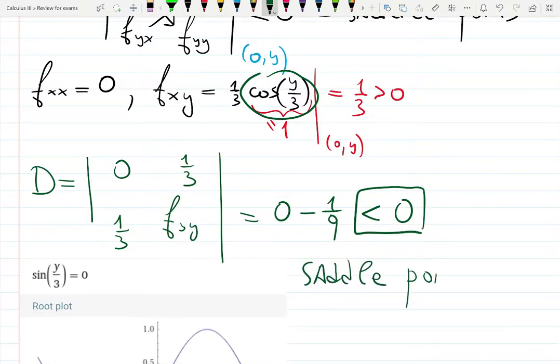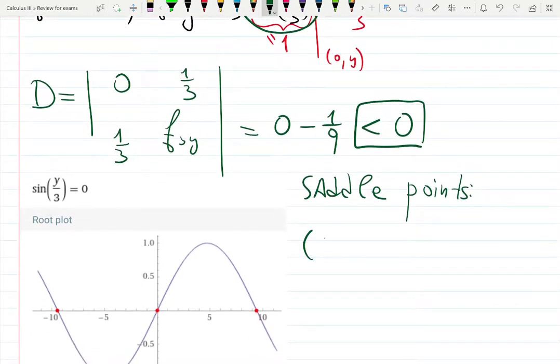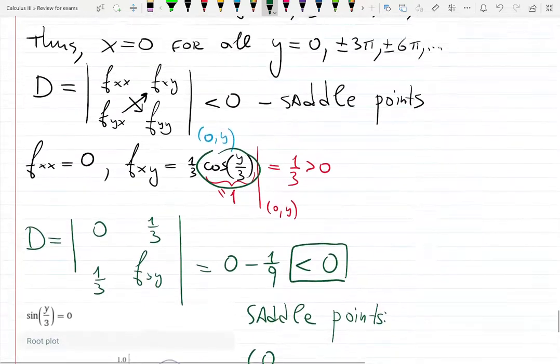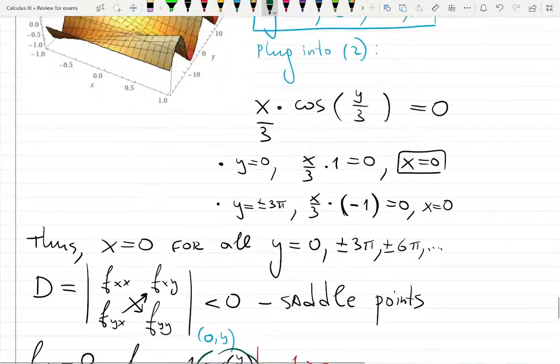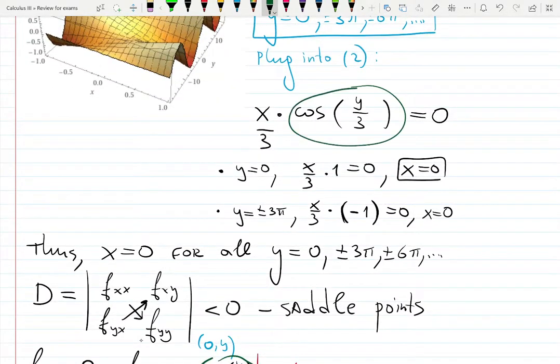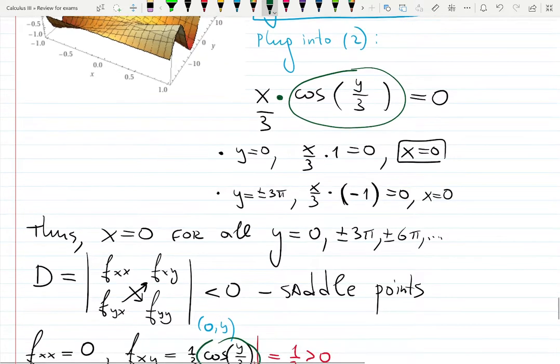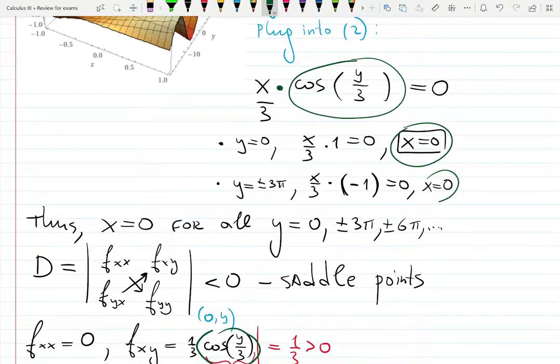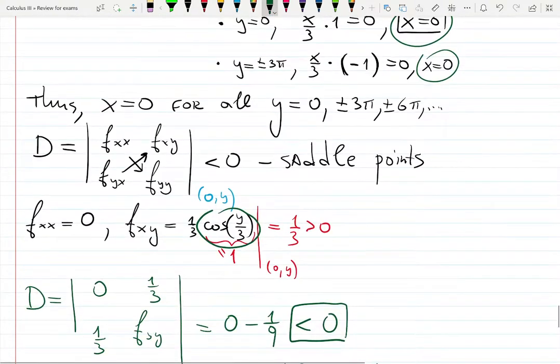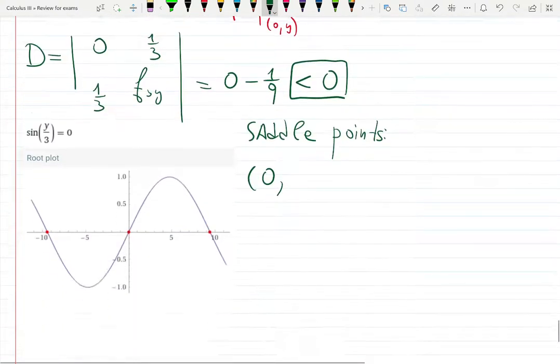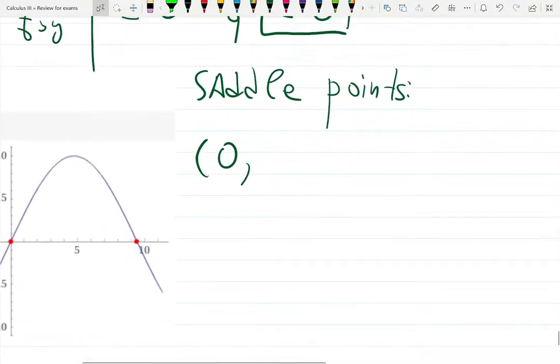Saddle points occur at (0, y), where x is always zero. Remember that? Because no matter what we plug here, it will be multiplied by x. And when I set it equal to zero, x gives you zero again and again and again. So x is always zero.